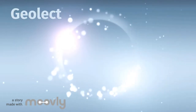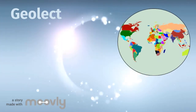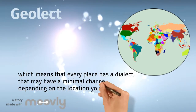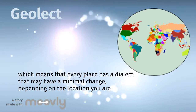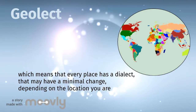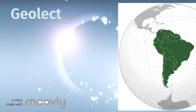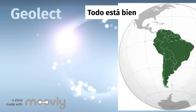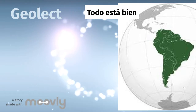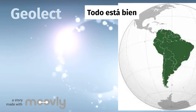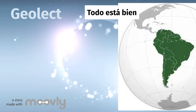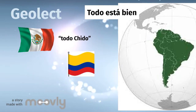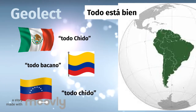Geolect is a combined word as well, formed from 'geographical' and 'dialect,' which means that every place has a dialect that may have minimal changes depending on the location, since social behavior and environment influence the speaker's dialect. For example, in Latin America, Spanish varies depending on where you are. Let's review the sentence meaning 'everything's all right.' Depending on which geographical zone you are in, the sentence will change but the meaning remains. In Mexico it is 'todo chido,' in Colombia it is 'todo bacano,' and in Venezuela it has its own variation.